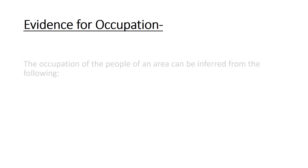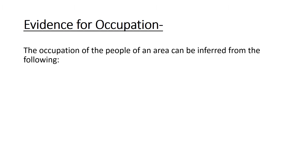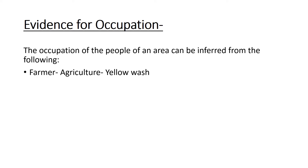First, let's look at evidence for occupation. The occupation of the people of an area can be inferred from the following things. Farmer or agriculture — if you see some yellow wash, you can say that people are engaged in agriculture and their occupation is farming.